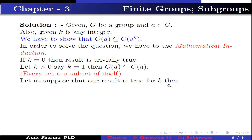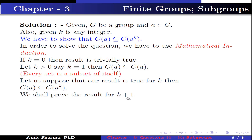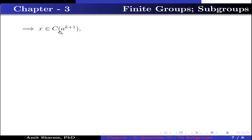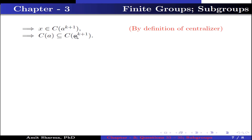Suppose the result is true for k, i.e., C(A) ⊆ C(Aᵏ). We prove it for k+1. Let x ∈ C(A). Then x·Aᵏ⁺¹ = xA·Aᵏ. Since x ∈ C(A), xA = Ax, so this equals A·x·Aᵏ. Since C(A) ⊆ C(Aᵏ), x·Aᵏ = Aᵏ·x, giving A·Aᵏ·x = Aᵏ⁺¹·x. Therefore x·Aᵏ⁺¹ = Aᵏ⁺¹·x, which implies x ∈ C(Aᵏ⁺¹) by the definition of centralizer. Hence C(A) ⊆ C(Aᵏ⁺¹).